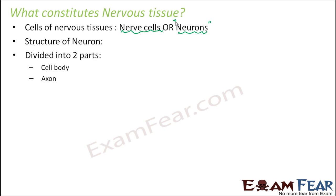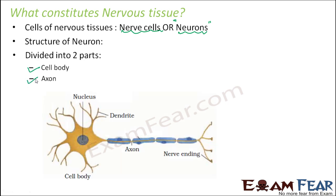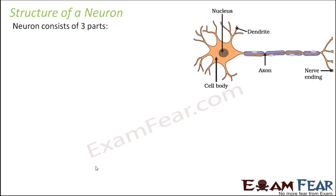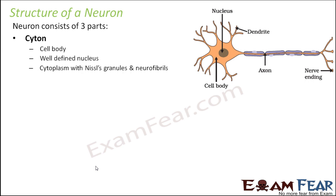The entire structure of a neuron can be broadly divided into two parts: cell body and axon. This entire structure here is the cell body, and this entire part is the axon. The cell body constitutes all the cell organelles, while the axon consists of some special things not present in all cells. The cell body is also known as cytone. It has a well-defined nucleus.